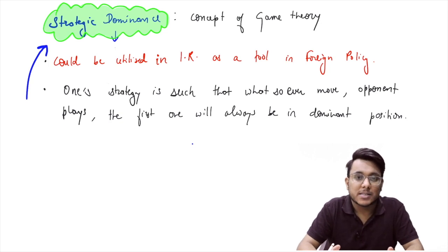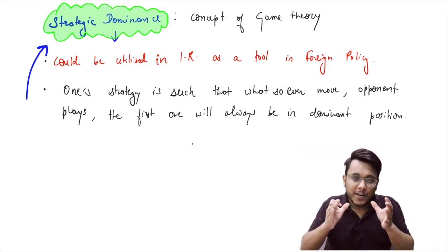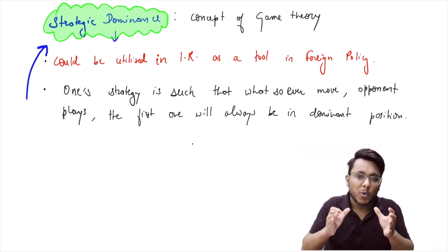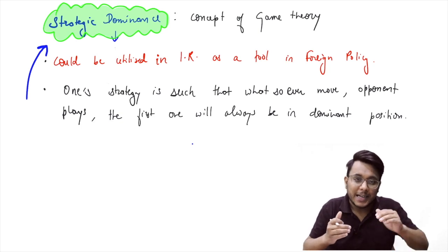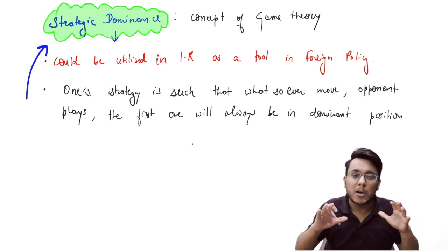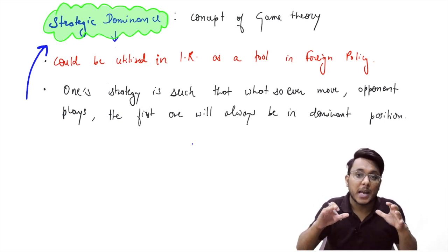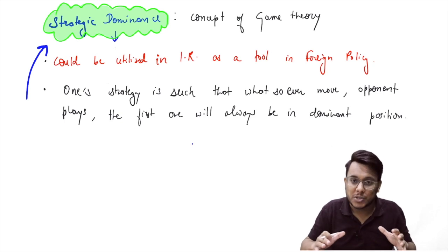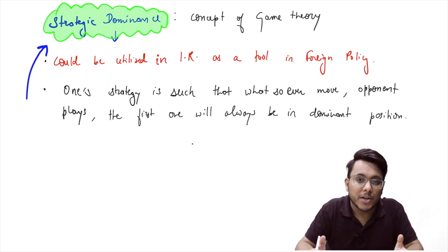The concept of strategic dominance originated in game theory. It means that the strategy of one player or participant is such that whatever move the opponent makes, the first player will always be in a dominant position — always in a better position. The concept of strategic autonomy is repeatedly coming into the news.